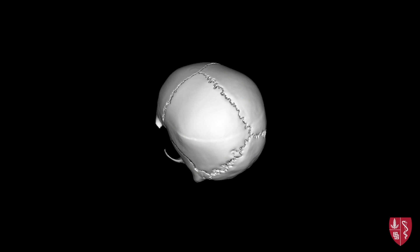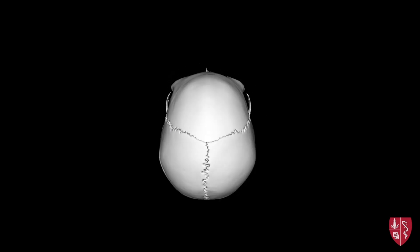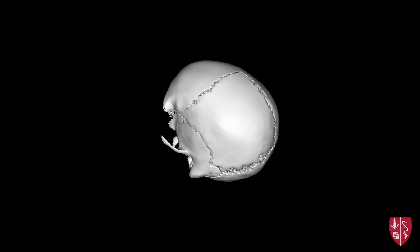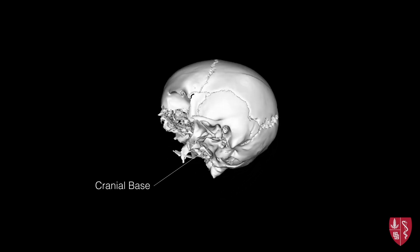The brain case may be further subdivided into the more superior aspect, known as the calvaria or skull cap, and the more inferior portion, known as the cranial base, which supports the weight of the brain.